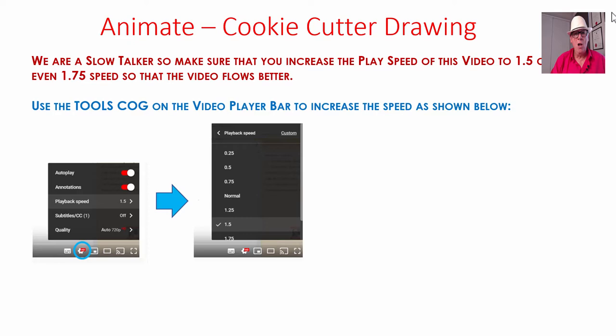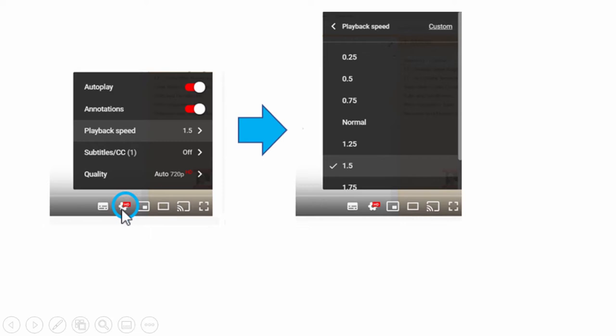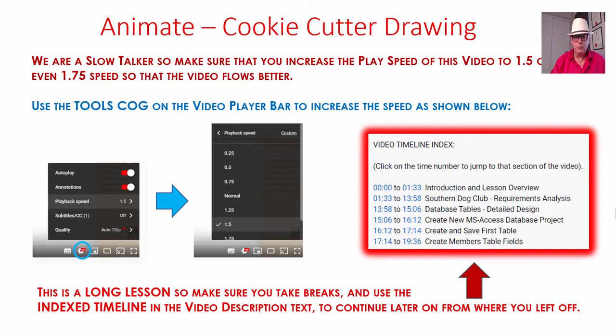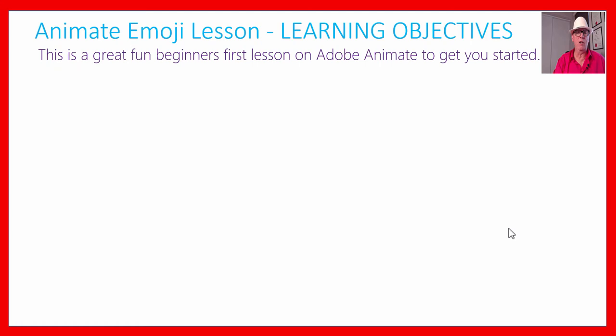This is a complete beginner's lesson, but remember we're a slow talker, so on the YouTube play bar down the bottom there's a tools cog. You can click on that and then change the playback speed either to 1.5 or 1.75, and you'll find the video flows a lot better. This is going to be a long video because it's supposed to be a complete introduction to Animate even if you haven't used it before. We will have a timeline index, so make sure you take breaks. In the video description, say if you get up to 'create the new project' and you stop, when you come back to YouTube, just click on the timestamp and that'll take you straight to the next section. This is probably two or three lessons in one, so take breaks if it's too long.